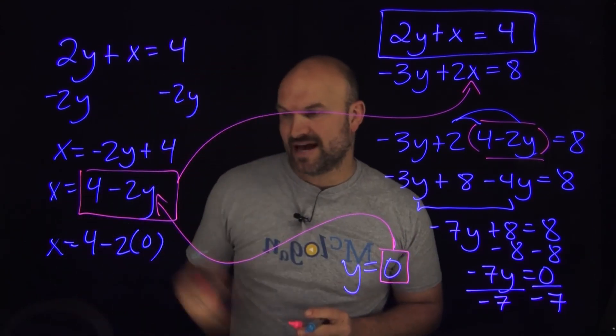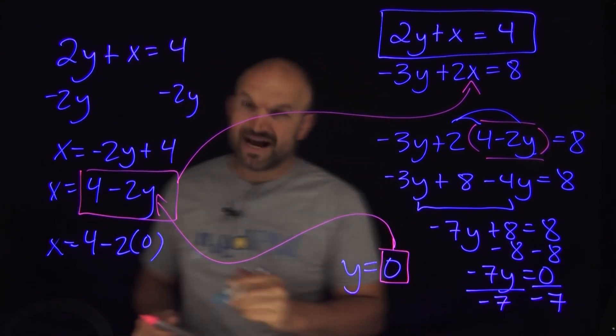And now I can go ahead and solve that. Well, 2 times 0 is just going to be 0. So therefore, x is going to equal 4.